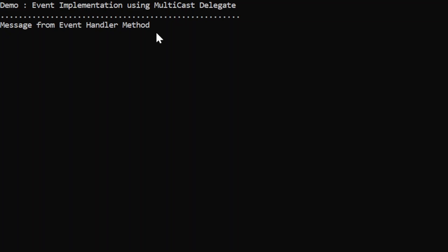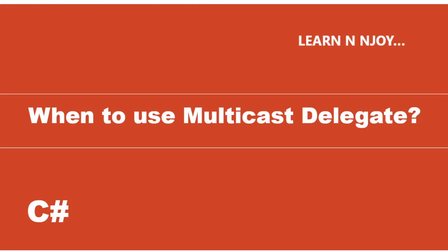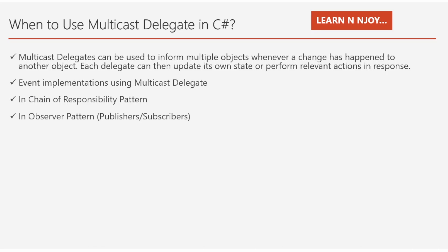When to use multicast delegate? There are multiple scenarios. First, multicast delegate can be used to inform multiple objects whenever a change has happened to another object — each delegate can then update its own state or perform a relevant action in response. Second, event implementation. Third, implementing the chain of responsibility pattern. And last but not least, use of multicast delegate in the observer pattern, where it simplifies the code. These are the basic scenarios where we can opt for multicast delegate.